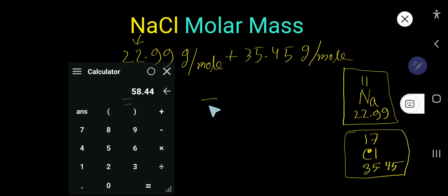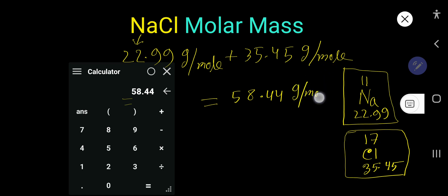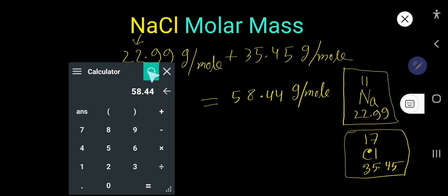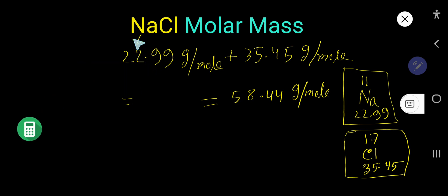We get 58.44, and the unit is grams per mole. So the molar mass of sodium chloride is 58.44 g/mol. I think this is helpful for you — thank you for watching, be well.